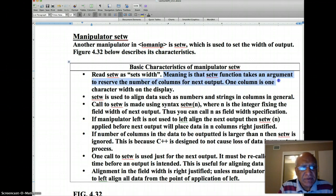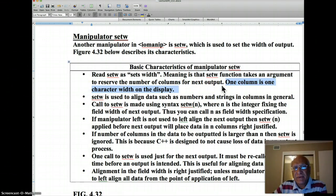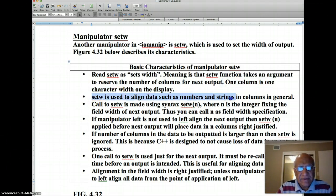These are the characteristics of setW: setW is a manipulator that sets the width, meaning the setW function takes an argument to reserve number of columns or number of characters in console output for the next output. One column is one character width on the display. SetW is used to align data such as numbers and strings in columns in general and build tables.